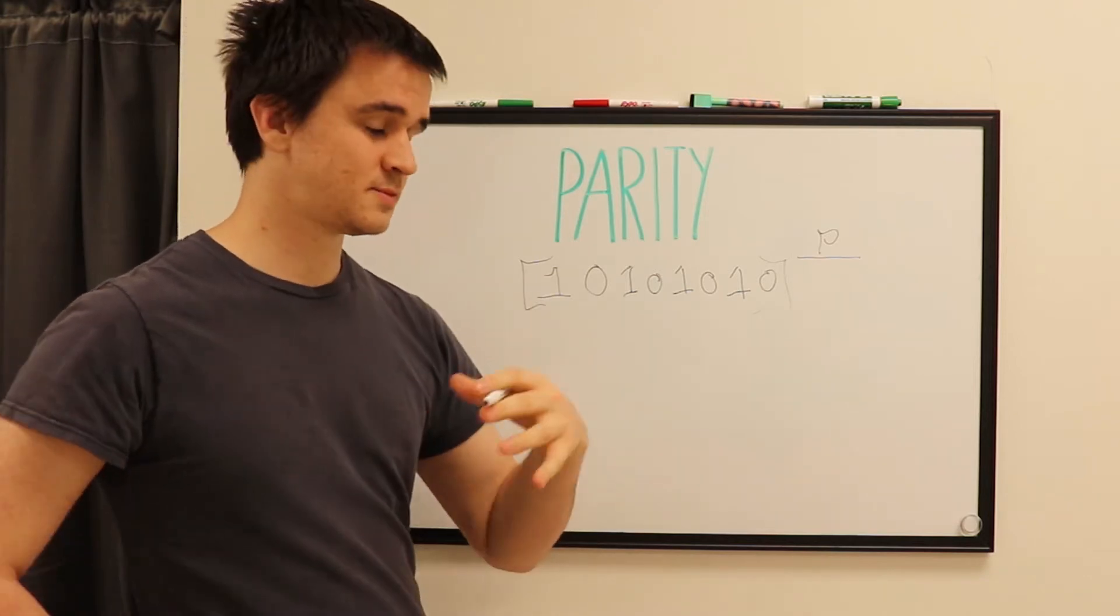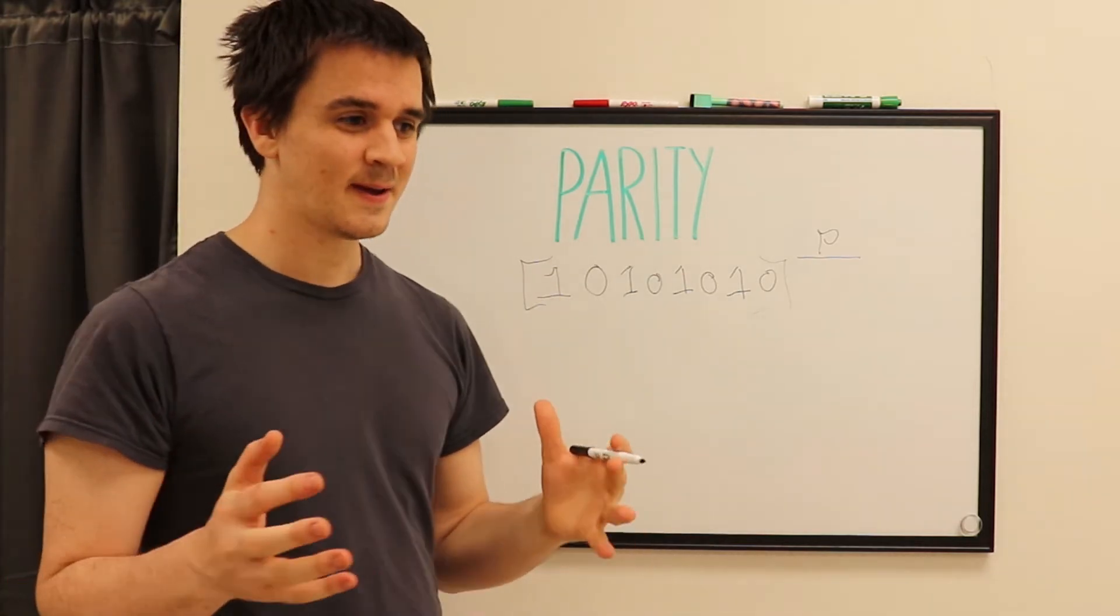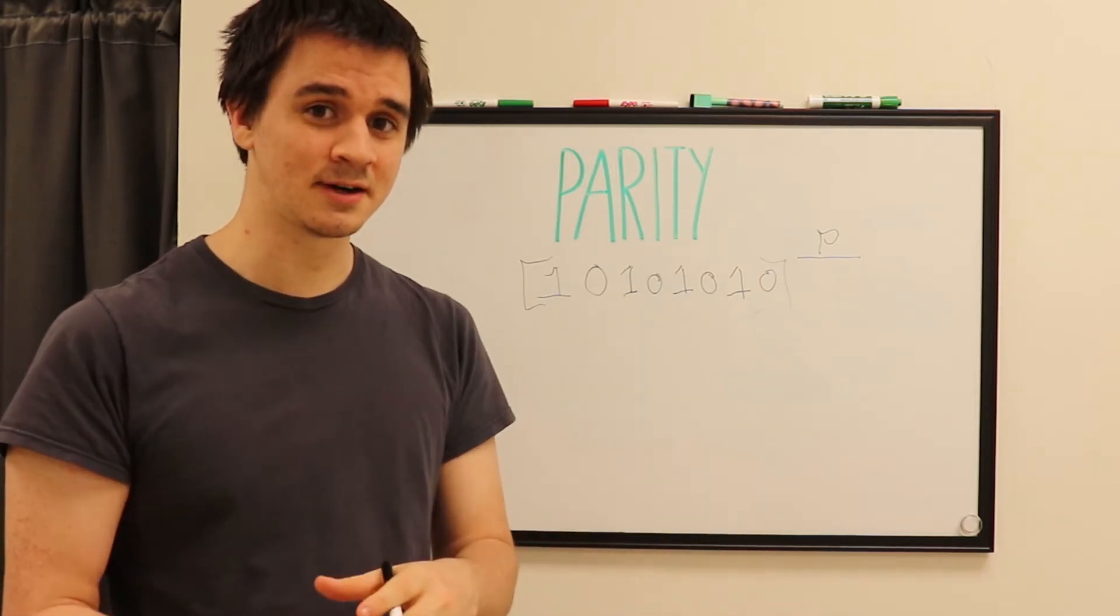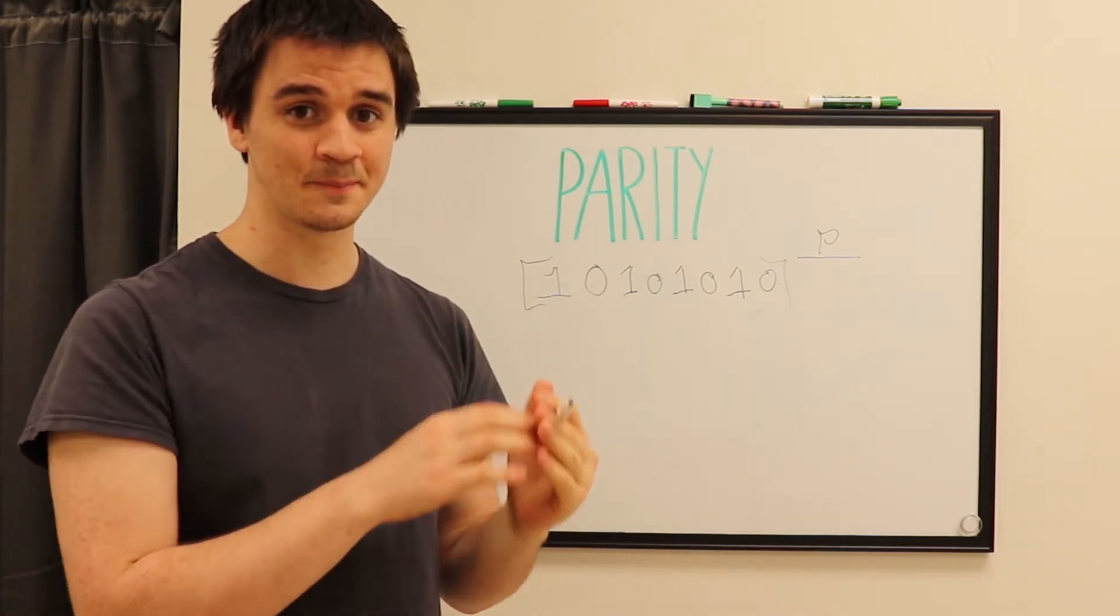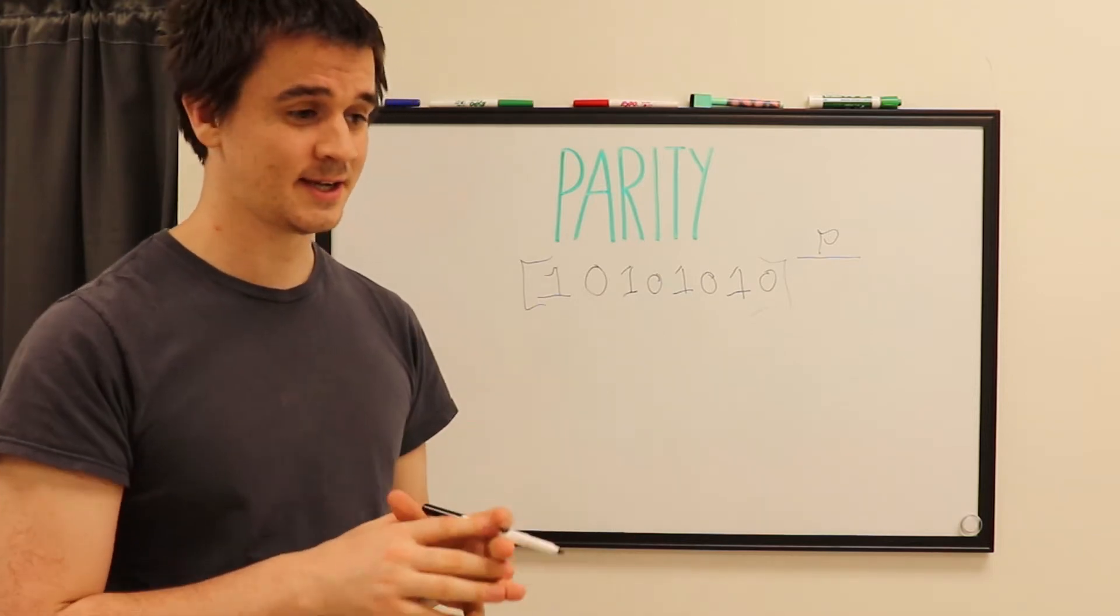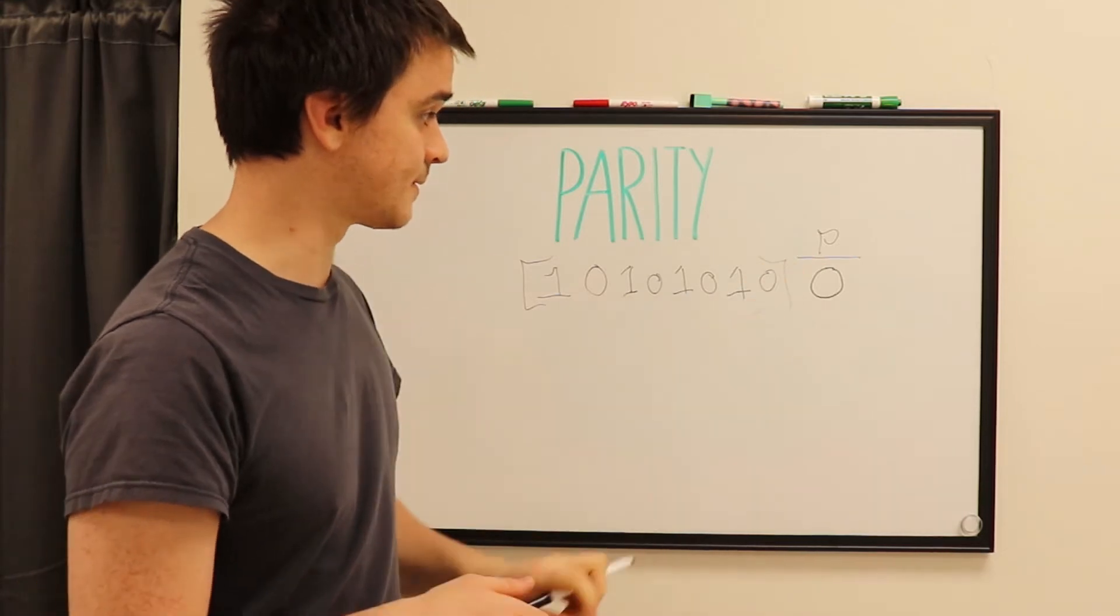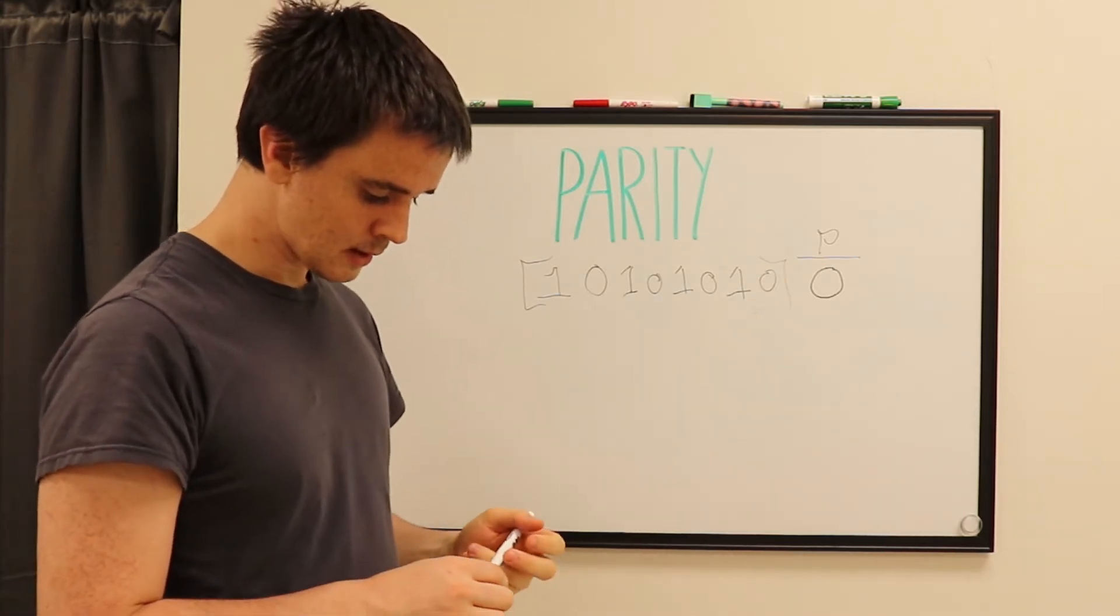Since it's even, we're going to say it's a 0. And to translate that is, if it was an odd number, we would say it's a 1. That's how parity works. If it was an even number, we'll call it a 0. It's just a true or false state. And since these are even, the parity is 0.